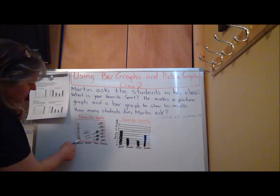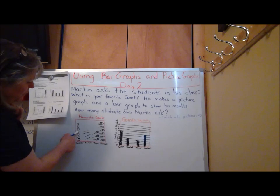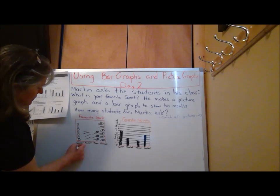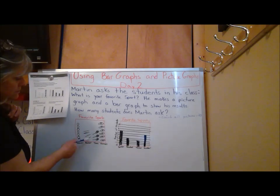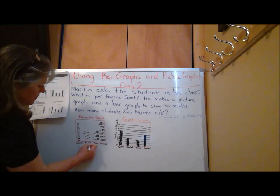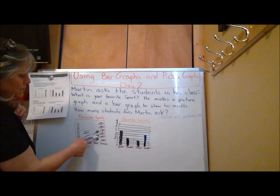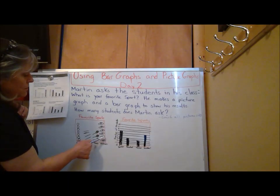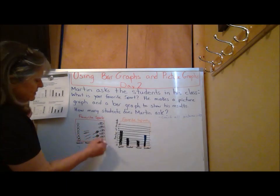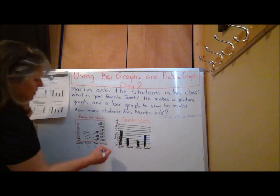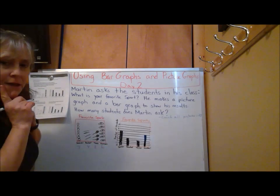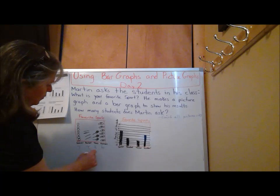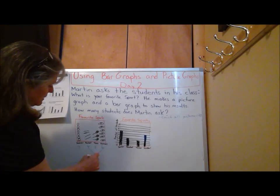I could count this one: 1, 2, 3, 4, 5, 6, 7, plus 1, 2, 3, 4, plus 1, 2, 3, plus 1, 2, 3, 4, 5, 6. Oh, and I see something. I see 4 plus 6 equals 10.